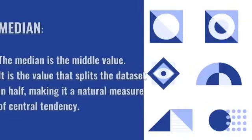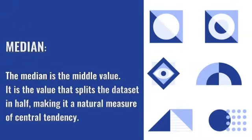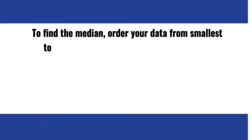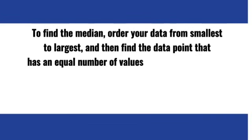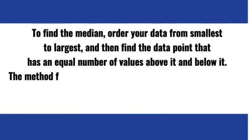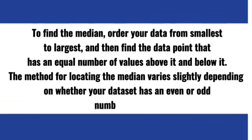Median. The median is the middle value. It is the value that splits the data set in half, making it a natural measure of central tendency. To find the median, order your data from smallest to largest, and then find the data point that has an equal number of values above it and below it. The method for locating the median varies slightly depending on whether your data set has an even or odd number of values.